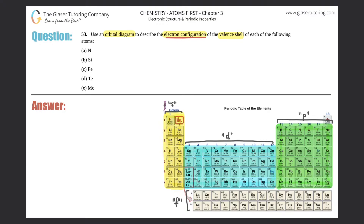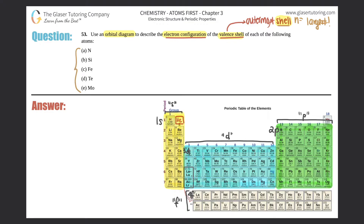You should also know that the s's start with 1s, the p's start with 2p, the d's start with 3d, and the f's start with 4f. Now, this is something new: valence shell means outermost shell. Shell is the word for the n number, and the n number is the large number in the front. So we're looking for the biggest numbers in these elements — that's going to be the valence shell.